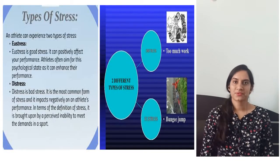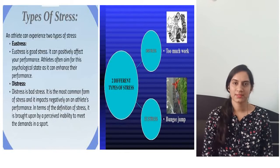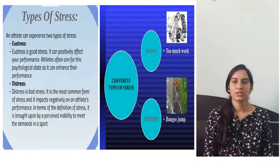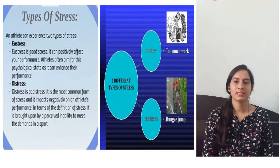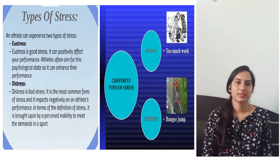There are mainly two types of stress which an athlete faces: distress and eustress. Distress is the stress related to a negative approach — too much work or too much pressure on the athlete. Eustress is a kind of positive stress in which the performance of an athlete increases. Let us see these in detail.